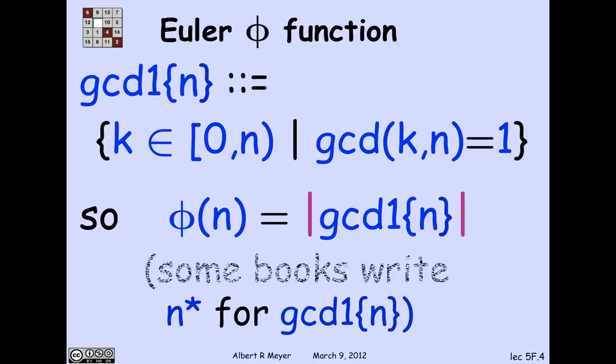Now, some authors call GCD1 of n n star. I didn't find that a very informative notation, and so I'm not using it. Phi of n is also, for your information, called Euler's totient function. But we'll just stick to calling it phi or Euler's phi.